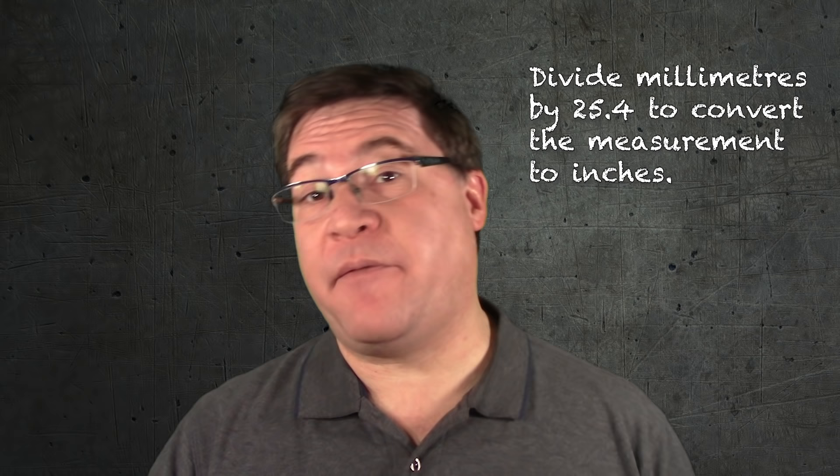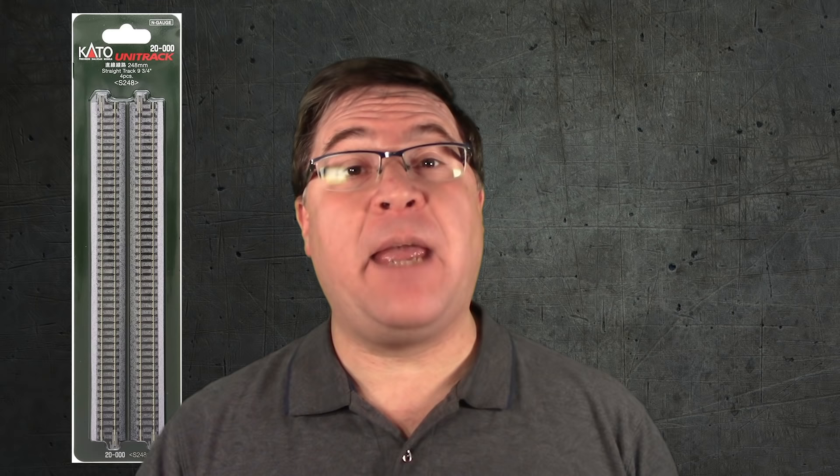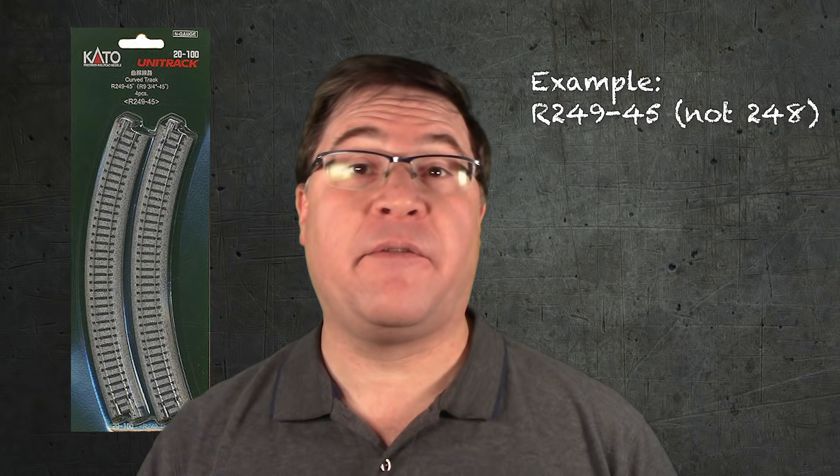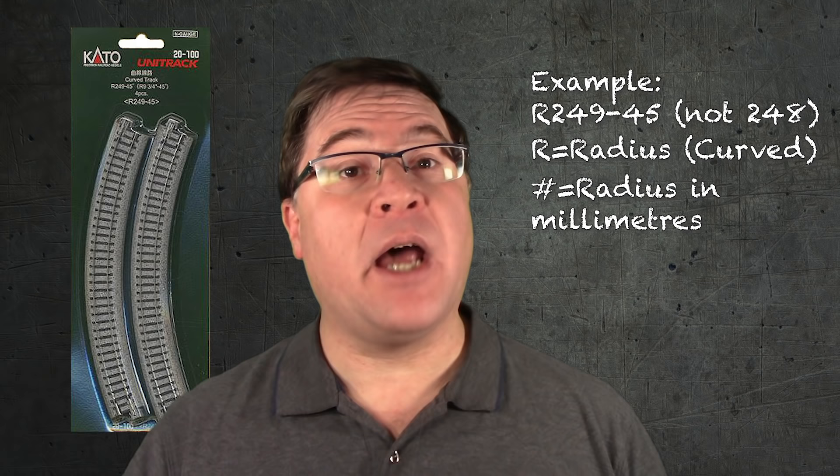Divide everything by 25.4 and that's your measurement in inches. So a basic length of track is labeled as S248. This means that the track is straight and has a length of 248 millimeters, which is about 9.75 inches long. Similarly, a piece of track that has the label of R248-45 means that it's a curved piece of track with a radius of 248 millimeters or 9.75 inches and covers a 45 degree arc.